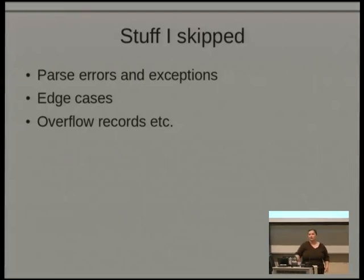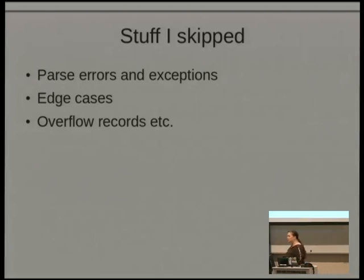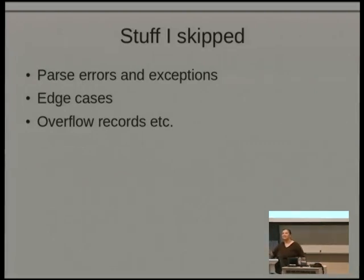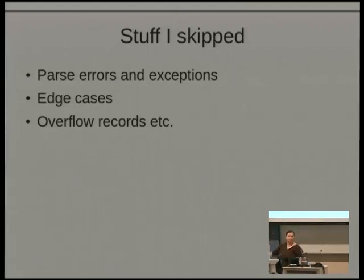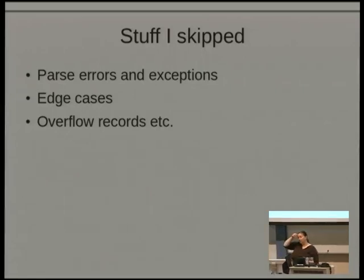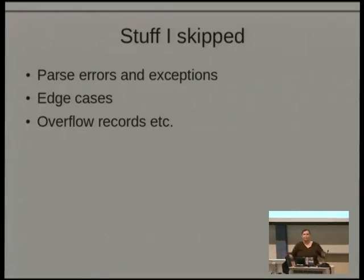Some things I didn't cover were how to handle parsing errors and exceptions because I'm running out of time. I didn't cover edge cases — in particular, I didn't cover overflow records. If you make a request and get back an error, ASIC parses you back something that's about five lines long, and I'm not handling that. Unfortunately, I'm also not validating the data — so if they give me back ten records when they said they'd only give me back five, I don't care.